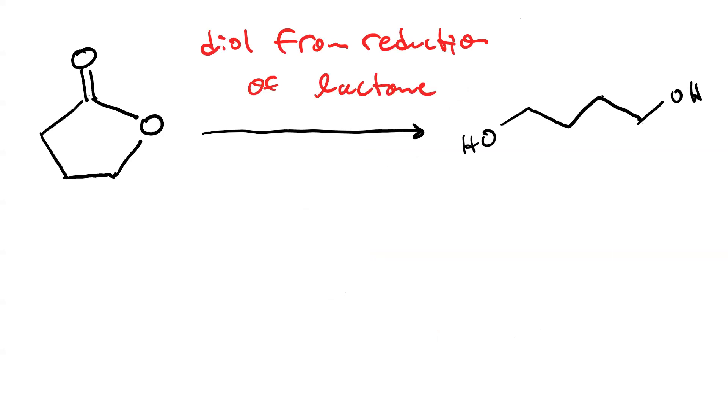Here's another nifty way to get a diol. When you reduce a lactone—this is a lactone, it's a cyclic ester—but when you reduce a lactone, the ring opens to give you a diol with the same number of carbons as there were to begin with. And to do this, you use excess LAH followed by water.